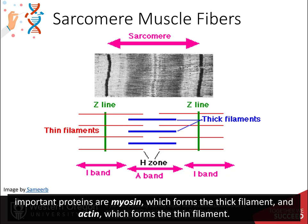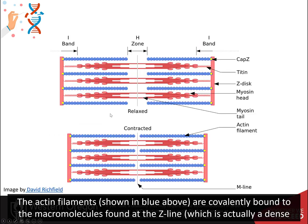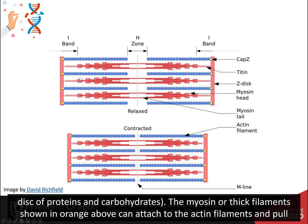Two of the important proteins are myosin, which form the thick filaments, and actin, which form the thin filaments. The actin filaments, shown in blue above, are covalently bound to the macromolecules found at the Z line, which is actually a dense disk of proteins and carbohydrates.